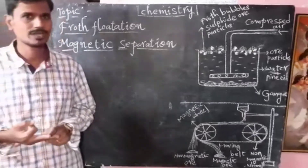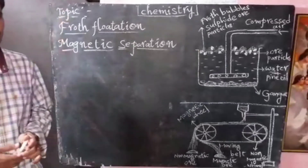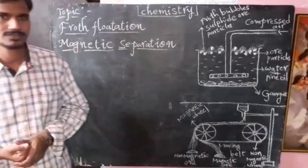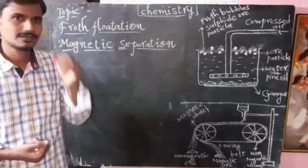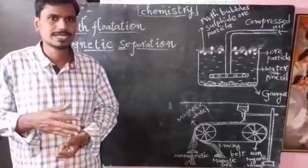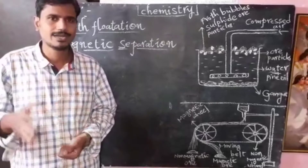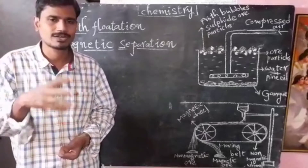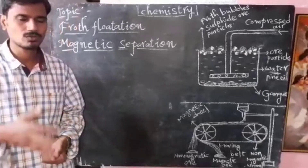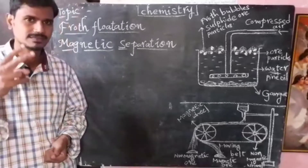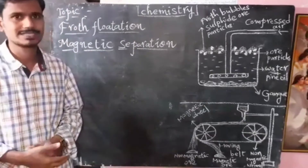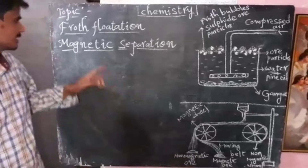Now we are going to discuss another two methods: froth flotation and magnetic separation. These are two physical methods used to remove the unwanted impurities — the unwanted rocky materials — from the ore. Two methods were already discussed in the last class, so now we are going to discuss the remaining two methods.